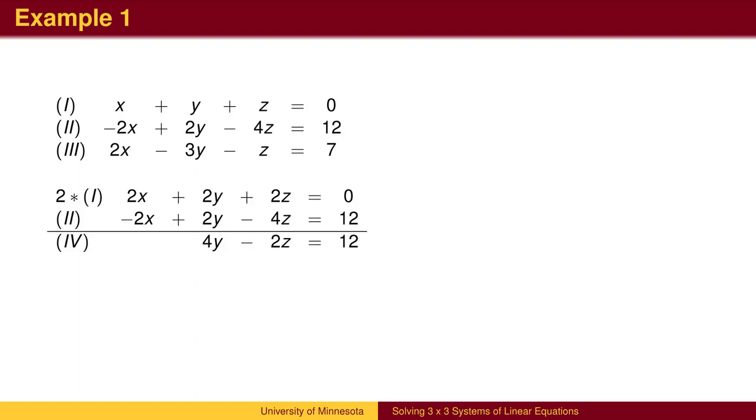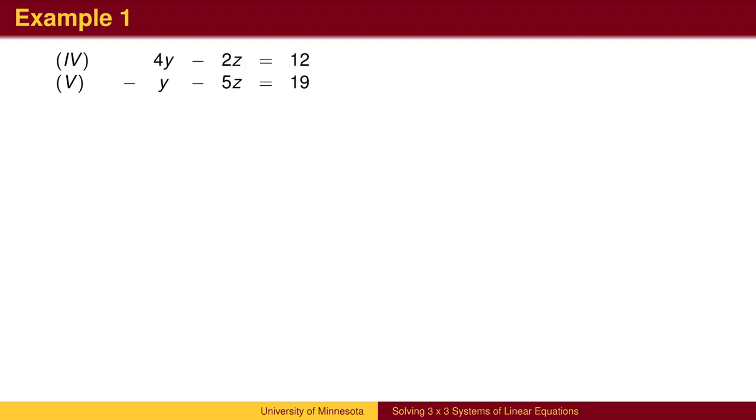First, take two times the first equation and add the second equation. This results in the equation 4y minus 2z equals 12. We now want to combine another pair of equations eliminating x. If we add the second and third equations together, we get another equation involving y and z. We can now work with these two equations.